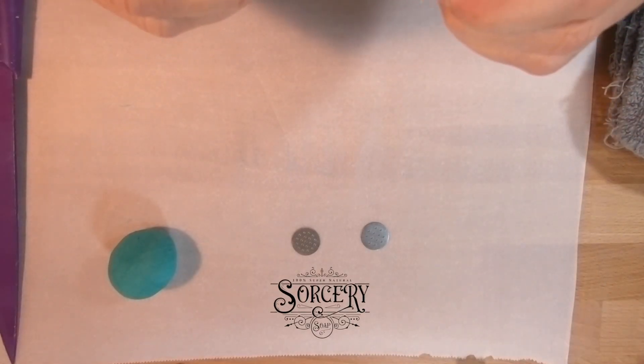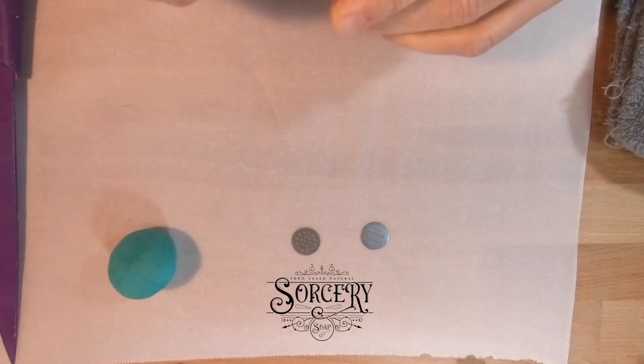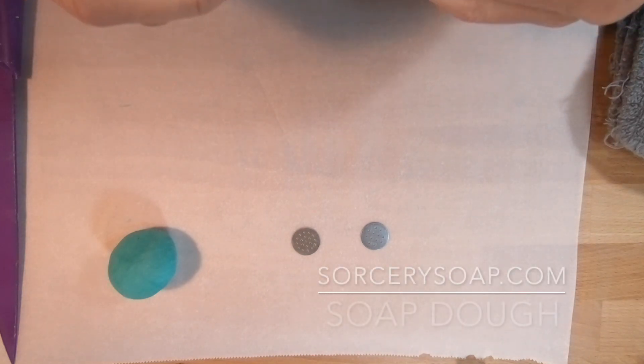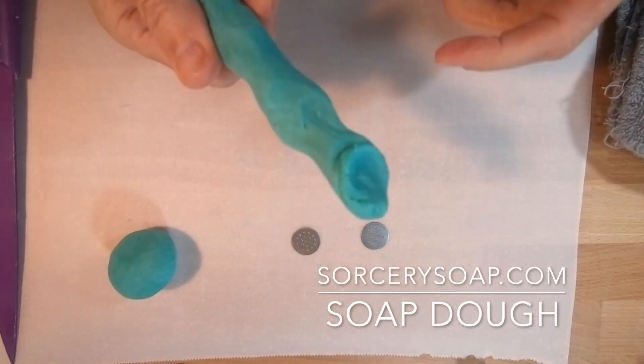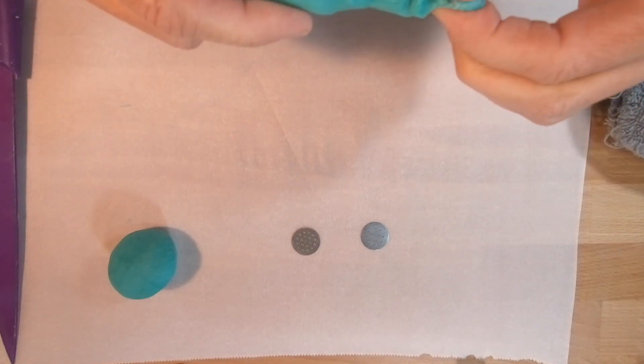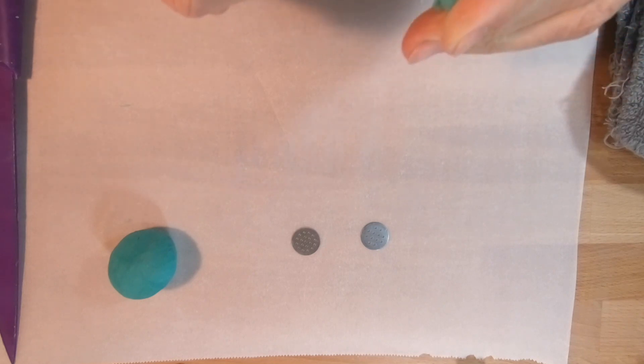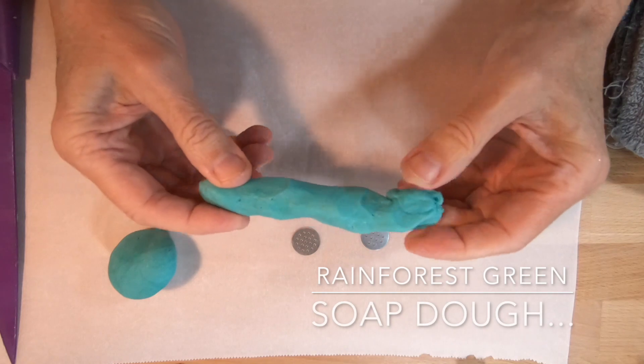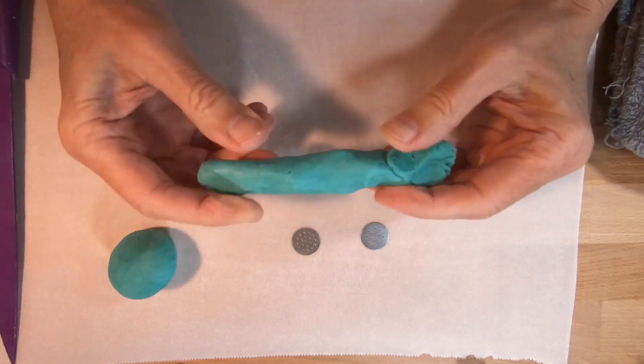Hi, this is Bea from Sorcery Soap and I'm going to show you how to make cold process soap sprinkles. First of all, you want some soap dough. I happen to have some and I just made this. It'll be on the website when this video goes up. This is rainforest and I scented it with first rain.